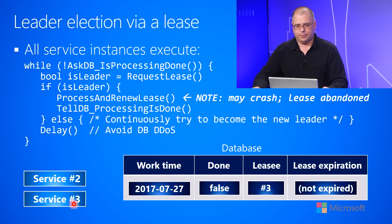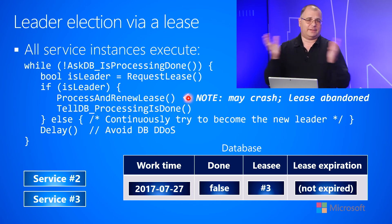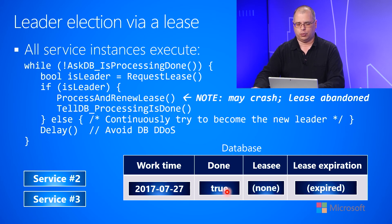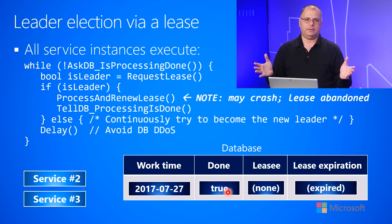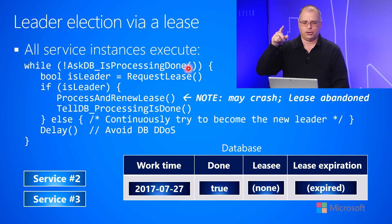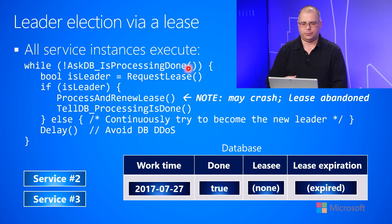Service instance three acquired the lease and is now the leader, so it processes the work item. Let's say it is successful and doesn't crash. It will tell the database that it is done processing, and that sets done to true. Now, as service instance two loops back around, it will see that the operation is done, know that it doesn't have to do it, and simply keep waiting for more work items to show up in the database — maybe it will be the leader for the next work item.